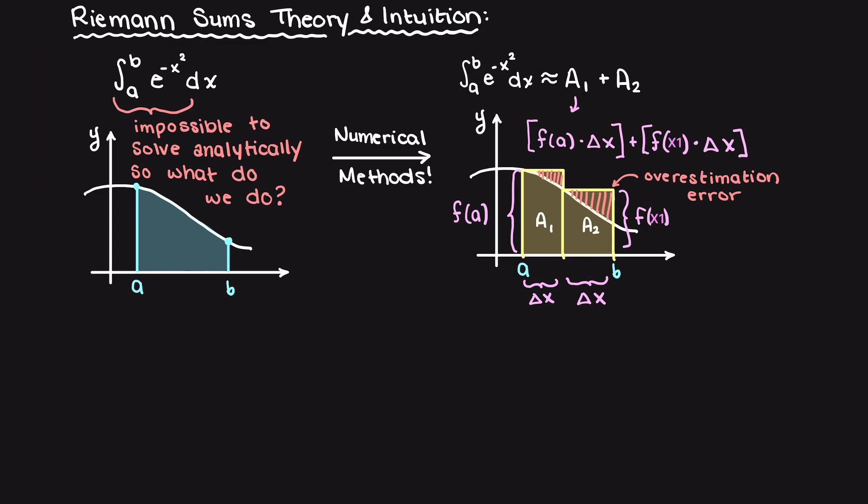Looking at our rectangles here, the area of each rectangle is easy to find, as it is simply going to be the height of the rectangle, which is our function evaluated at A in this first rectangle here, times the width, which is just going to be our step size, or delta x.